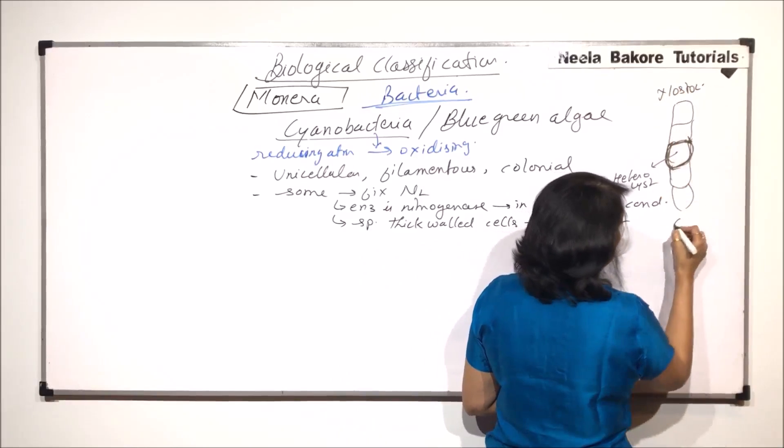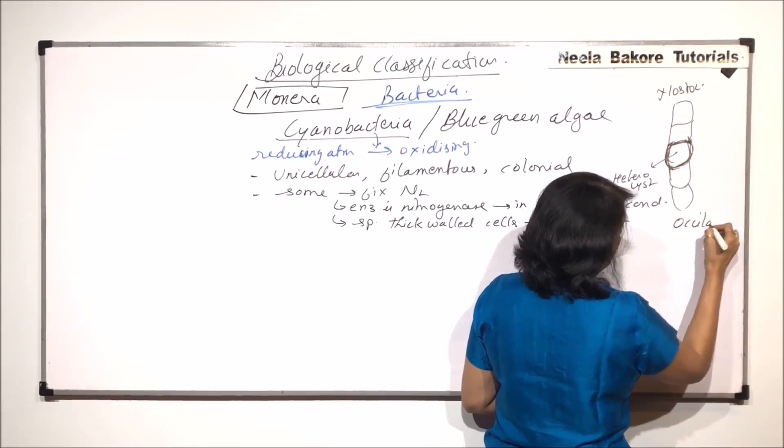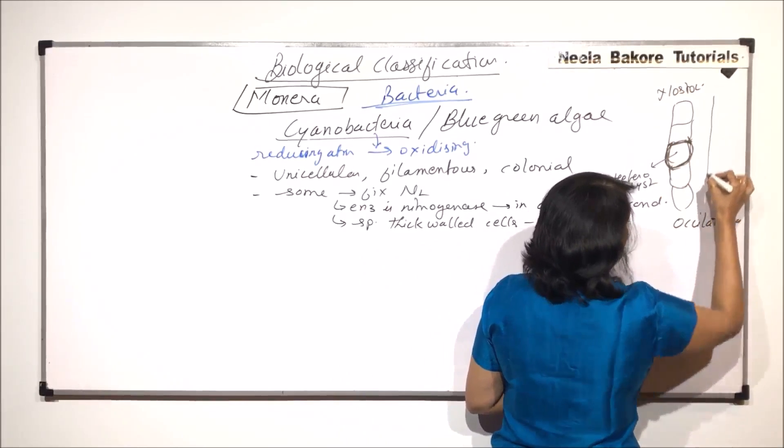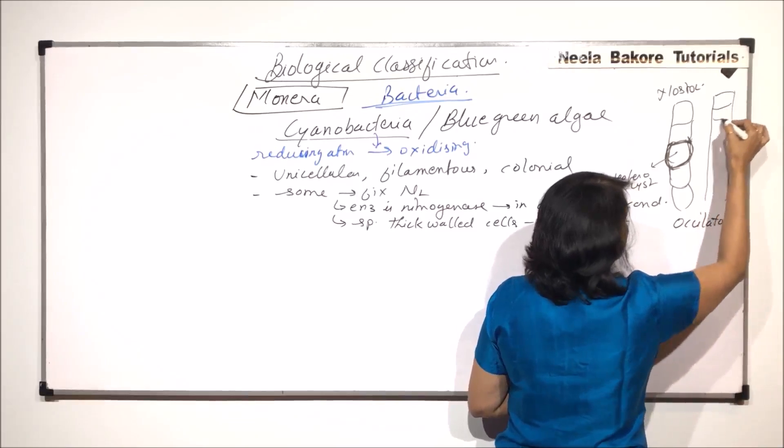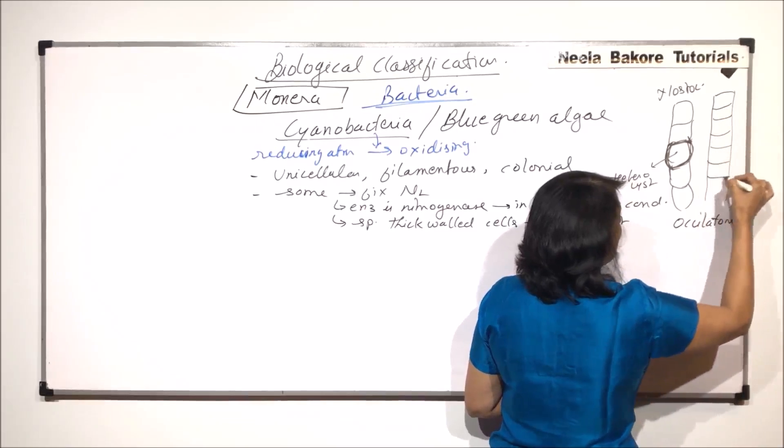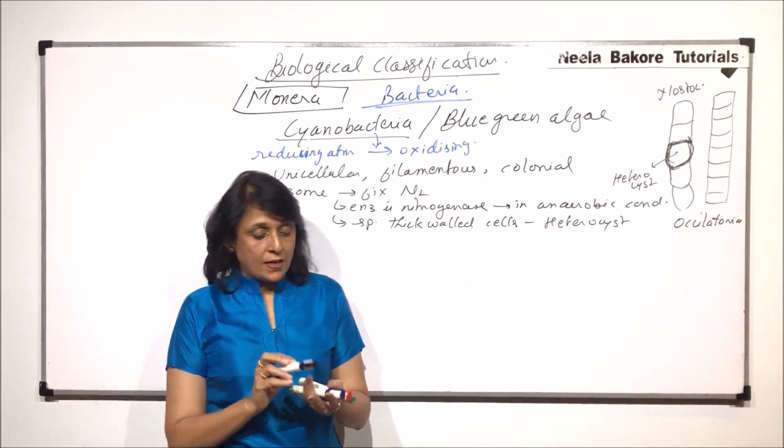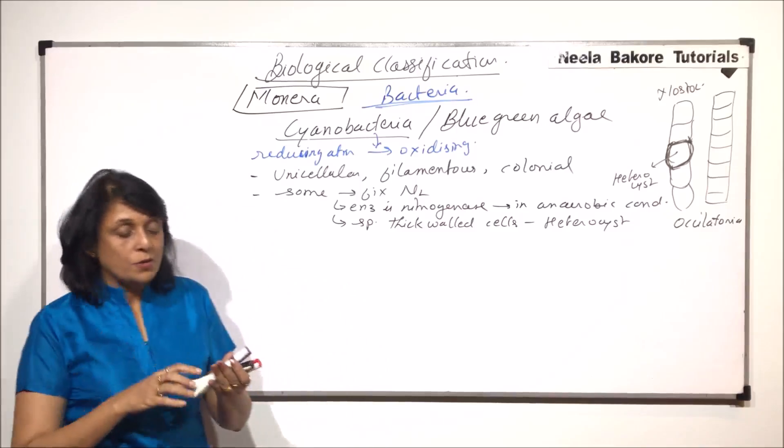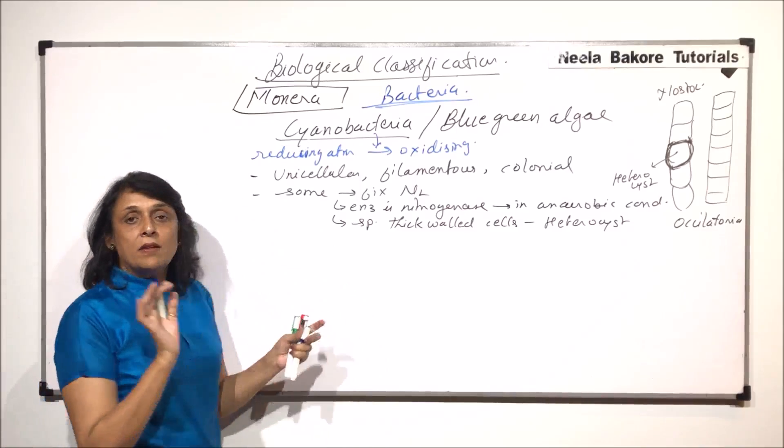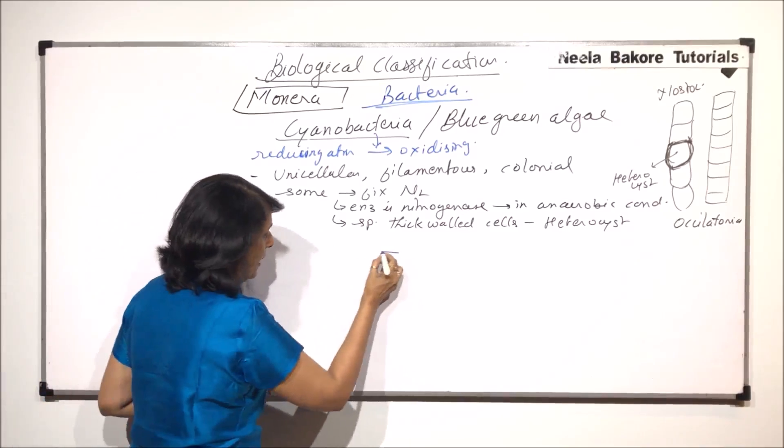If we talk of Oscillatoria, in case of Oscillatoria, the cells are again filamentous and here we do not find any heterocysts. So it is not necessary that the heterocyst is present in all types of cyanobacteria. Now, let us come to the structure and then we will take up the pigment part.